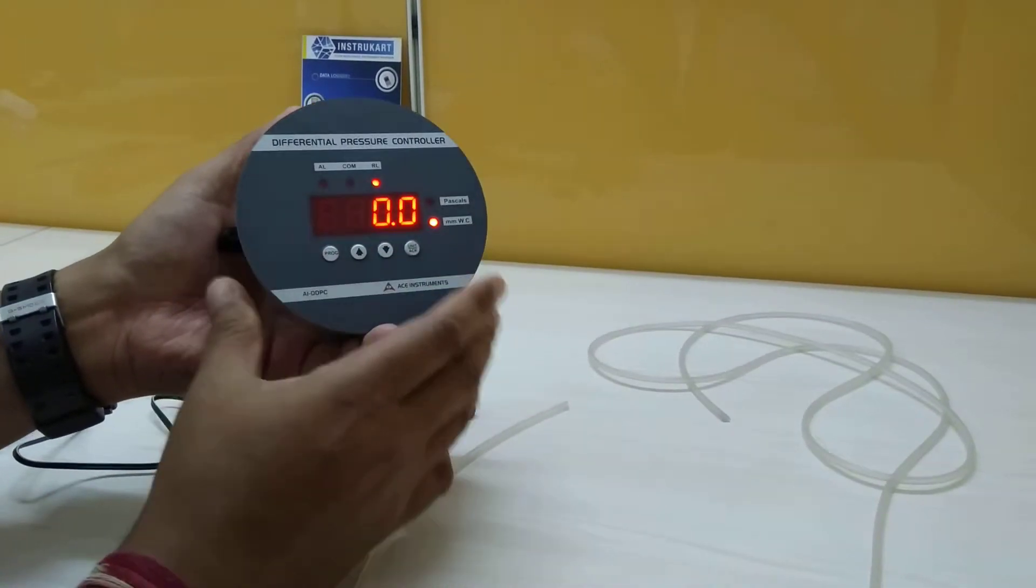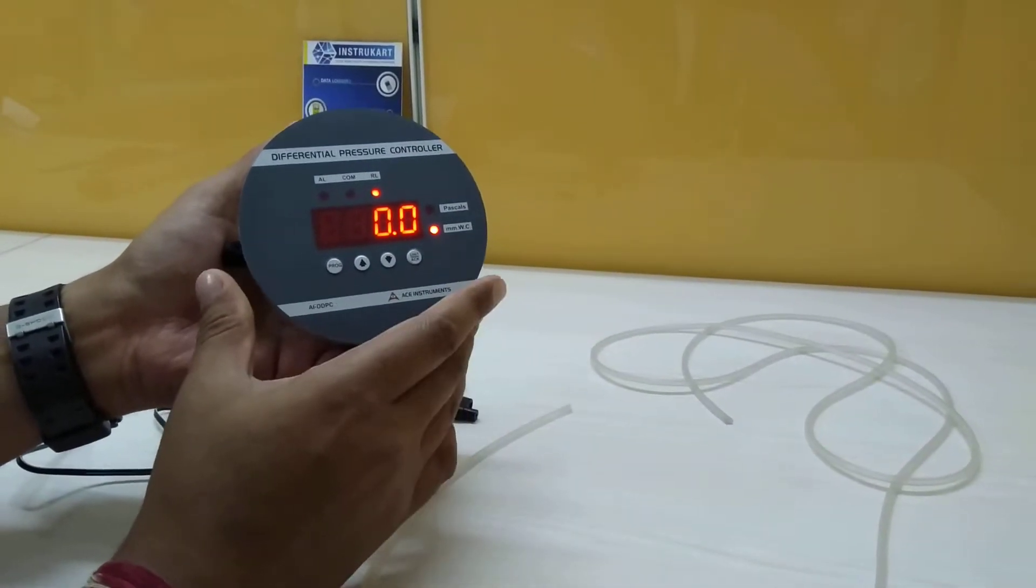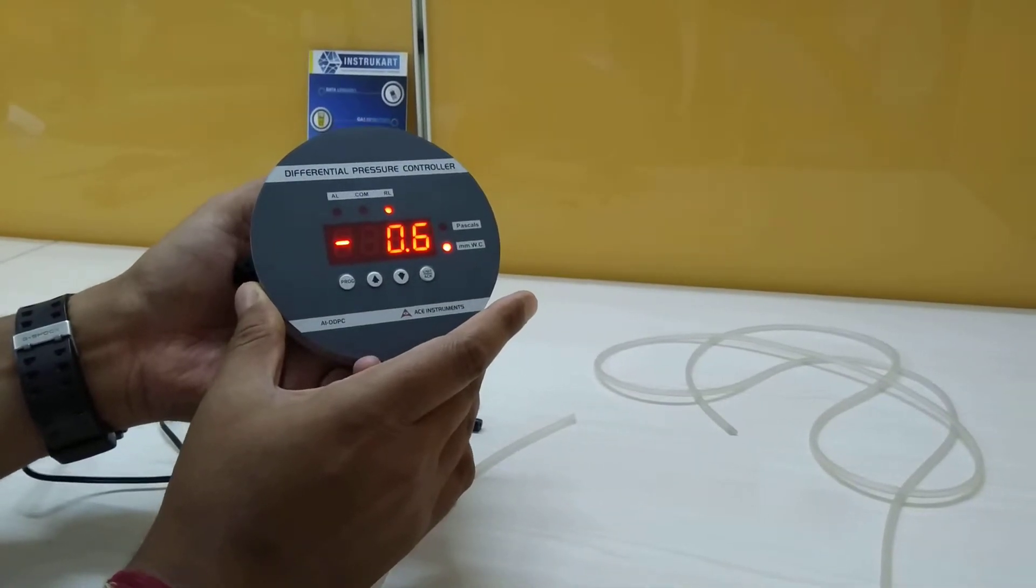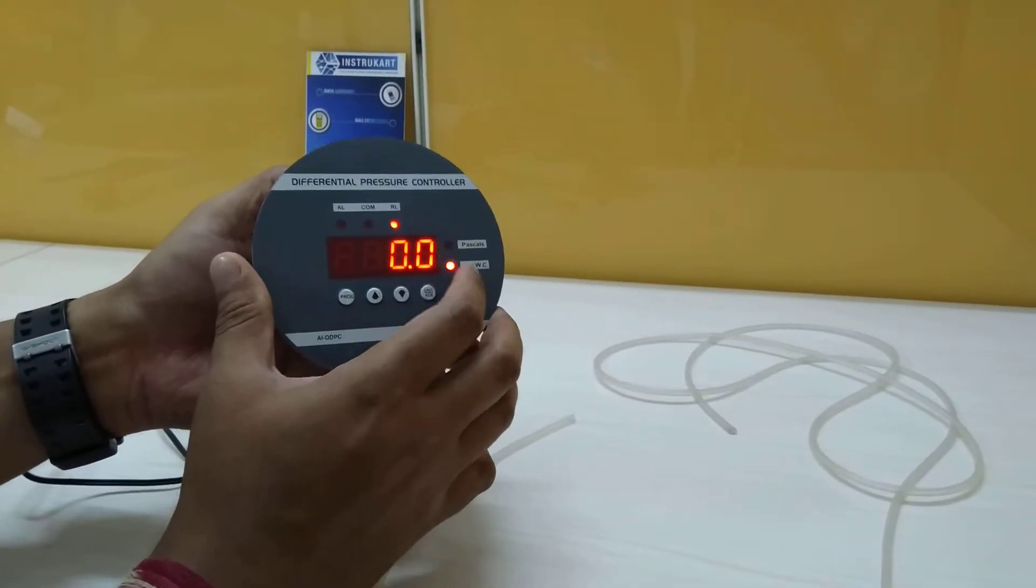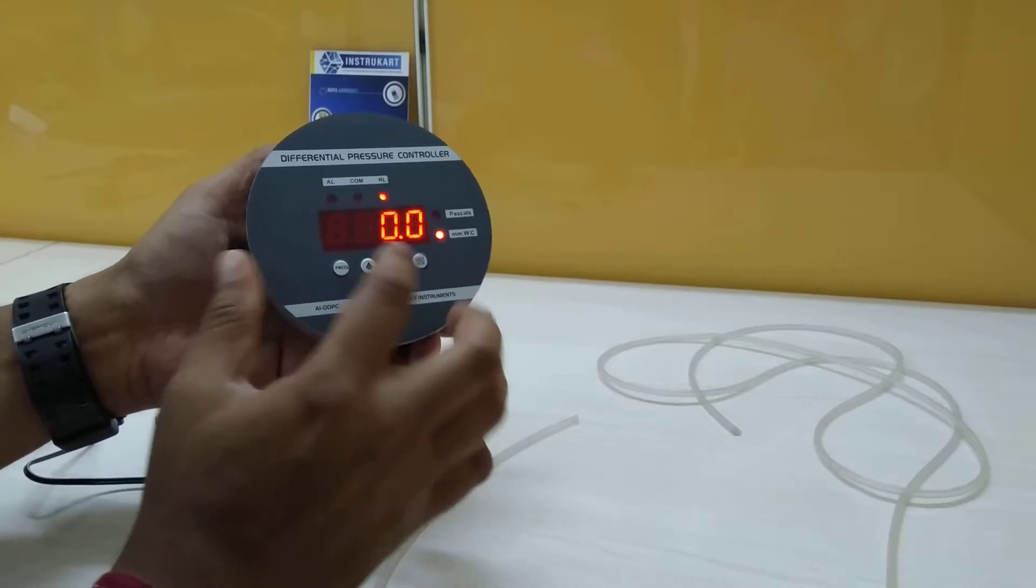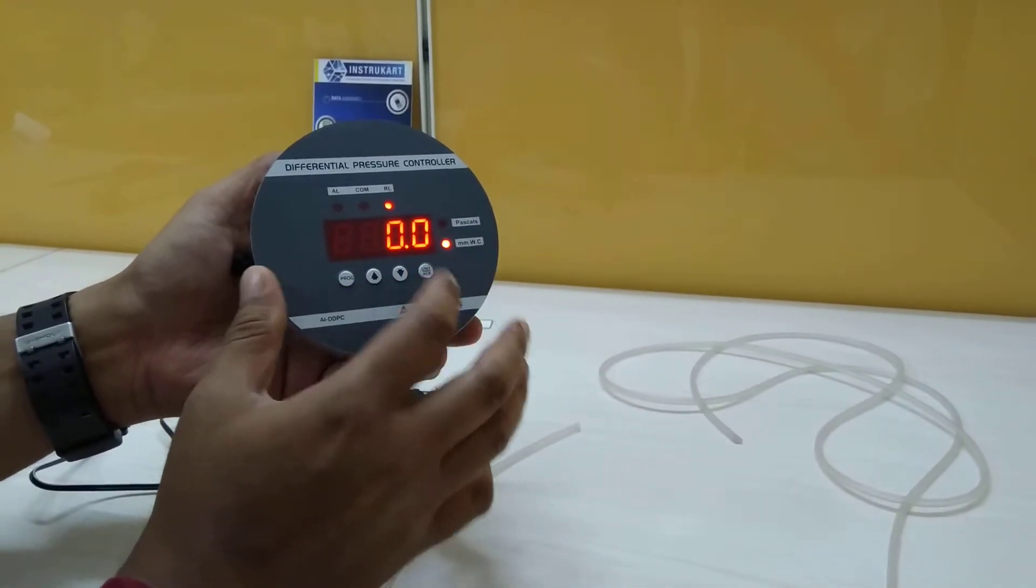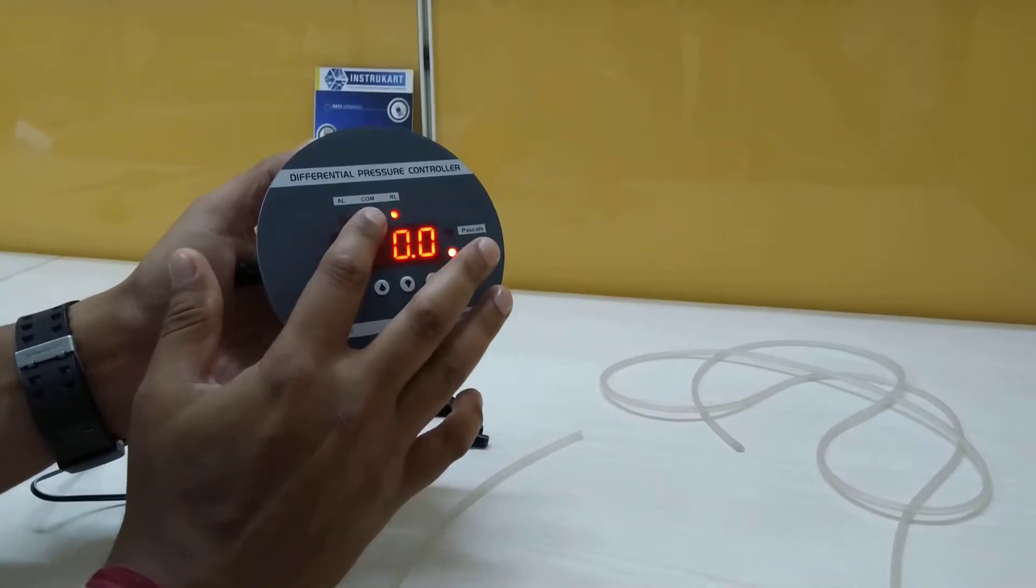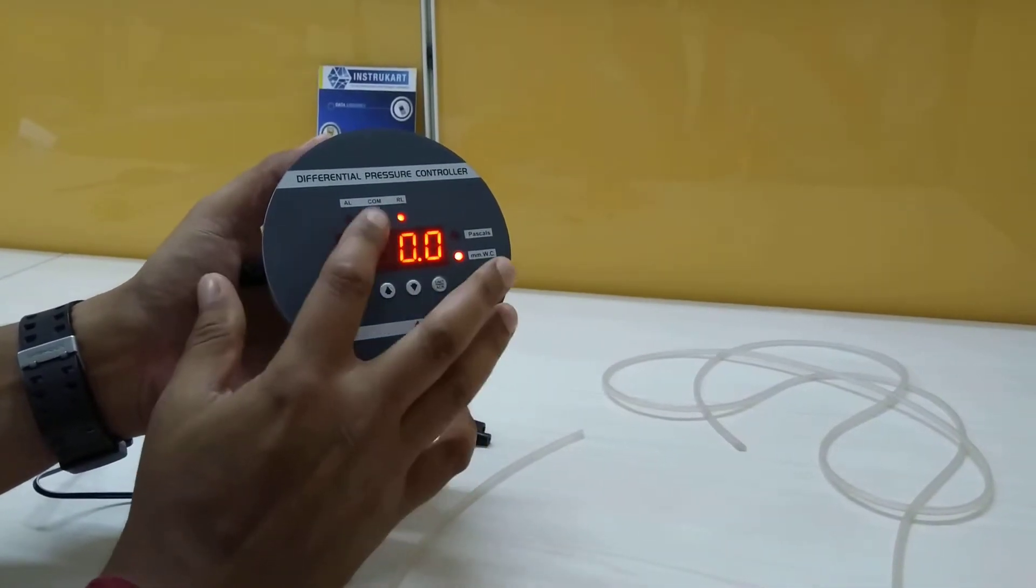It has the same functions and features as the differential pressure gauge. We can toggle between Pascal and MMWC, set setpoints, acknowledge alarms, and communicate with PLC or SCADA.